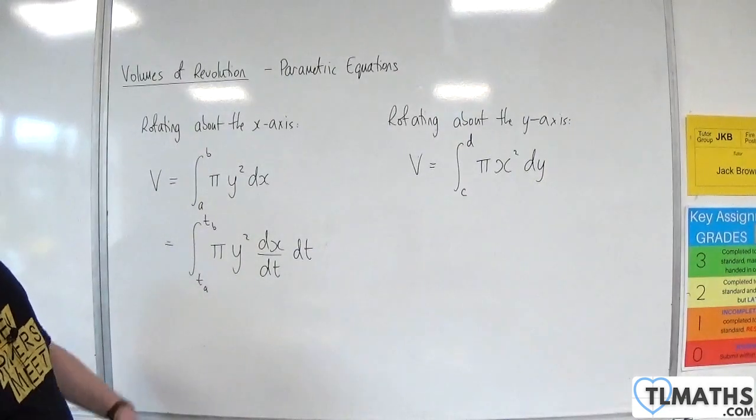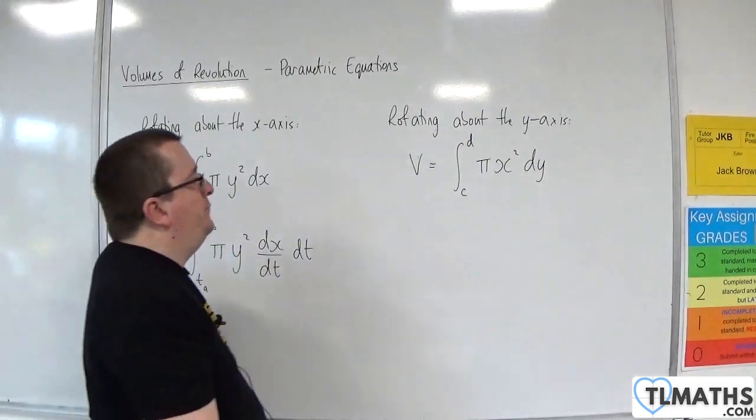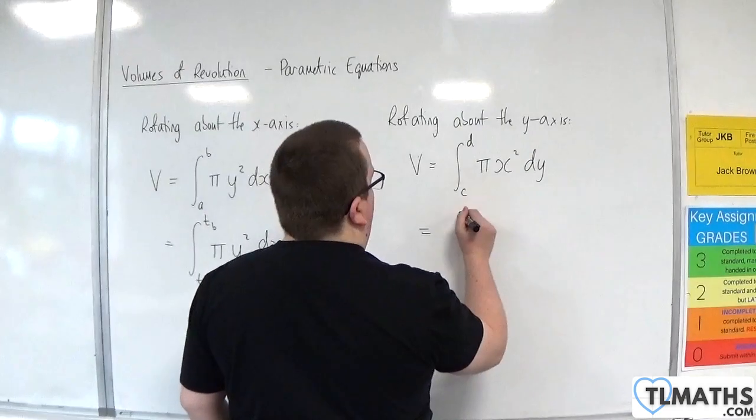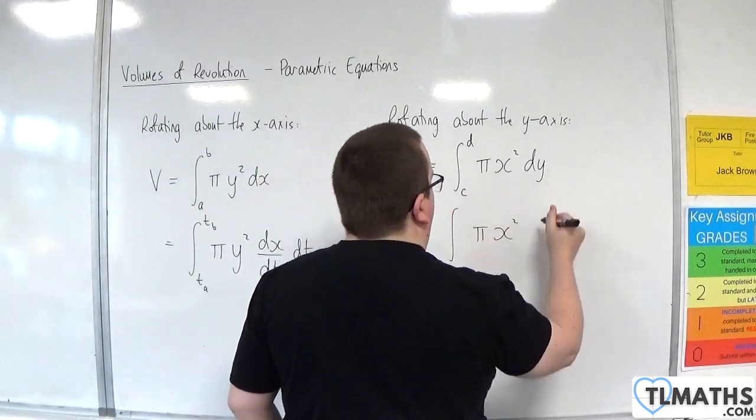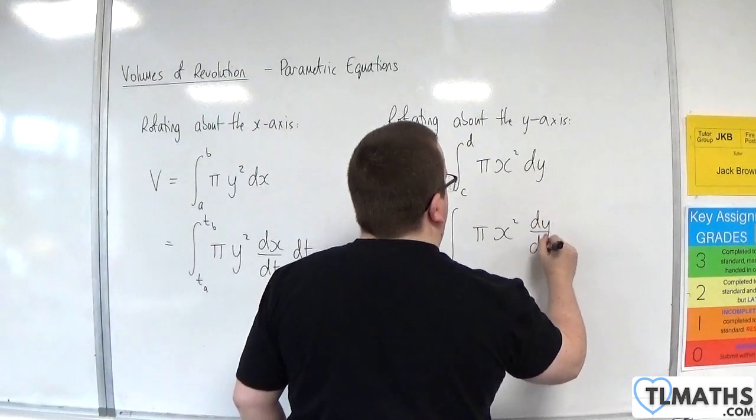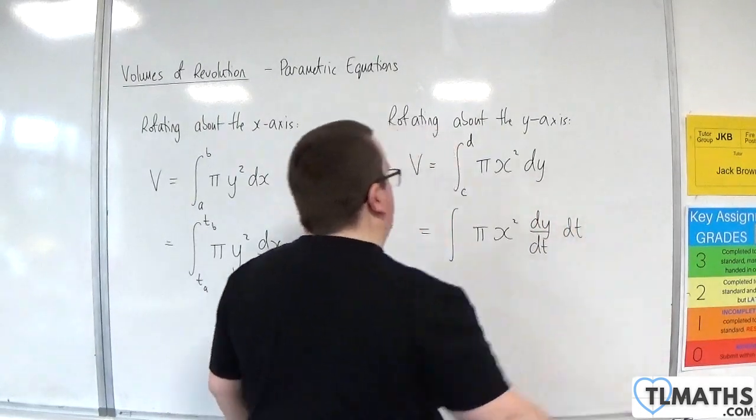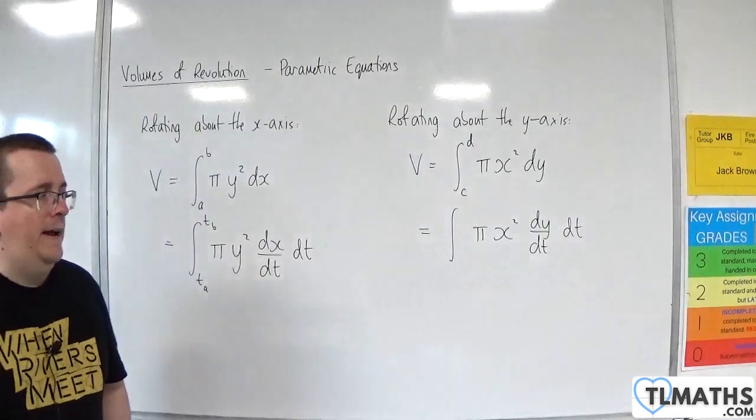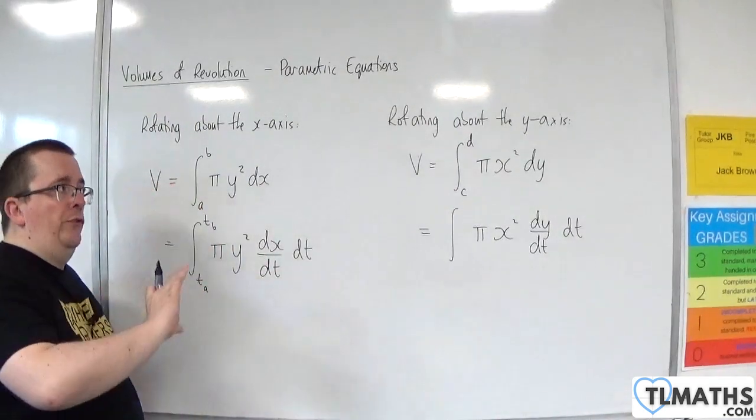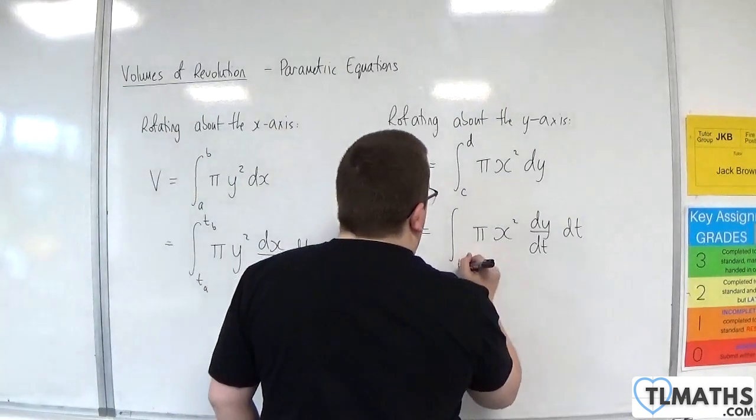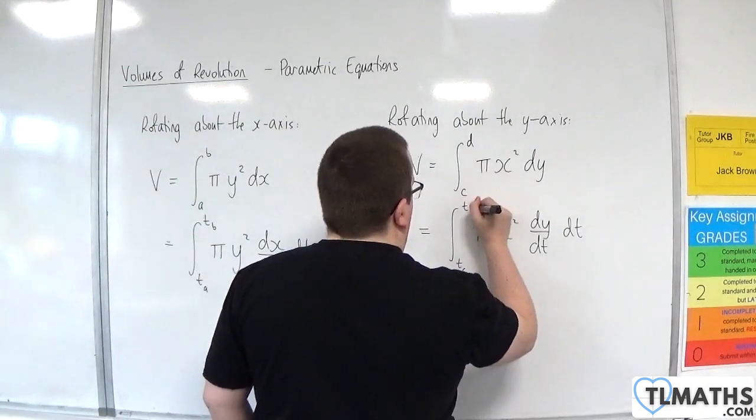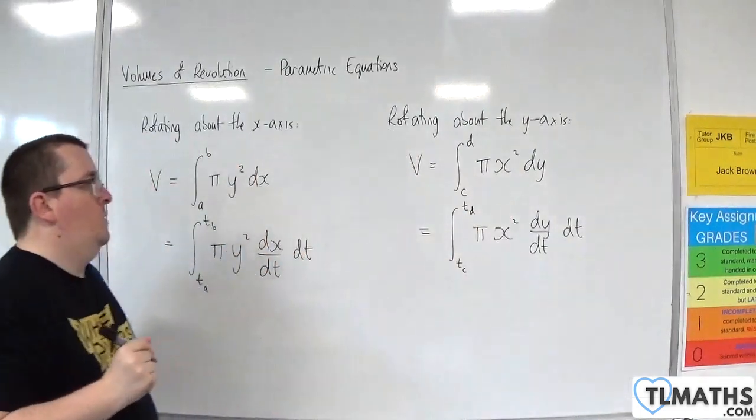Now, if you're doing the same but about the y-axis, then we would have the integral of pi x squared. I'm going to have to replace the dy with dy by dt times by dt. And likewise, if you're integrating between y equals C and y equals D, you need the corresponding t-values that go with that, so tc and td.